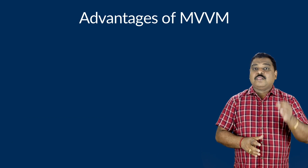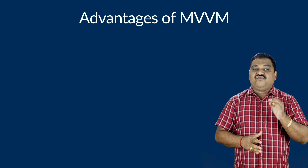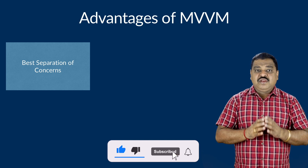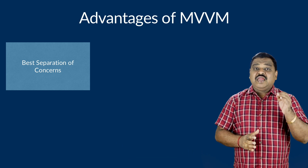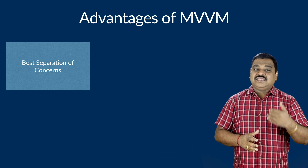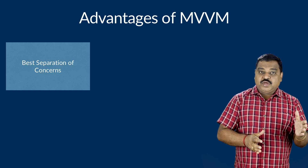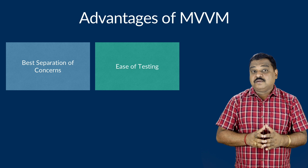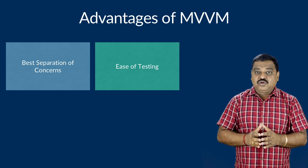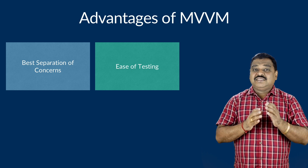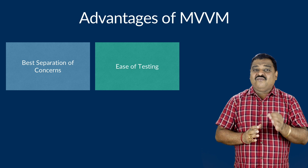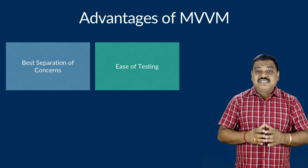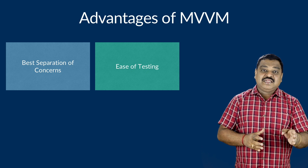Now let us look at some advantages of following MVVM architecture. First, better separation of concerns: since UI and business logic are separated, designers can work on the UI while developers work on the code simultaneously. Second, ease of testing: since MVVM decouples application logic from the UI, testing becomes more comfortable. We don't need a view to test — we can directly test the ViewModel, making it much easier to write unit tests against the core logic.